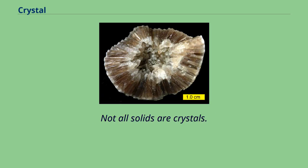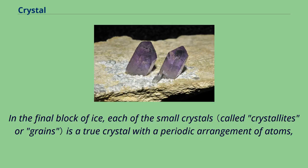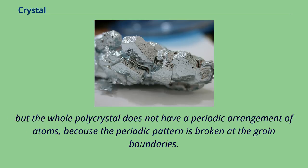Not all solids are crystals. For example, when liquid water starts freezing, the phase change begins with small ice crystals that grow until they fuse, forming a polycrystalline structure. In the final block of ice, each of the small crystals is a true crystal with a periodic arrangement of atoms, but the whole polycrystal does not have a periodic arrangement of atoms, because the periodic pattern is broken at the grain boundaries.